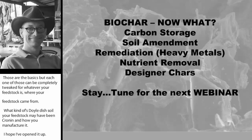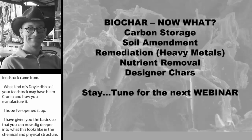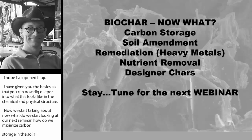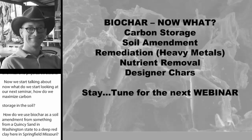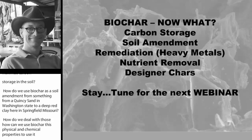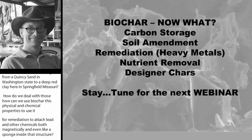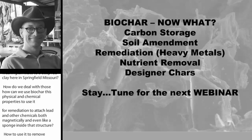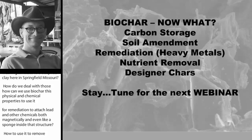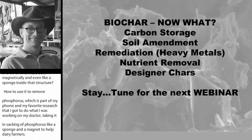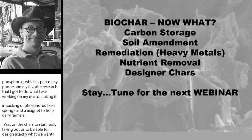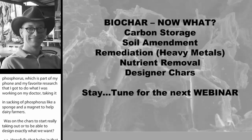Now when we start talking about now what, and we start looking at our next seminar, how do we maximize carbon storage in the soil? How do we use biochar as a soil amendment from something from a Quincy sand in Washington State to a deep red clay here in Springfield, Missouri? How can we use biochar and its physical and chemical properties to use it for remediation, to attach lead and other chemicals both magnetically and even like a sponge inside that structure? How do we use it to remove phosphorus, which is part of my fun and part of my favorite research that I got to do when I was working on my doctorate, taking and sucking up phosphorus like a sponge in a magnet to help dairy farmers? How do we design the chars to start really taking out or to be able to design exactly what we want? So hopefully that helped in that area of the physical and chemical structure. I know it was basic, but I encourage you to dig deeper and stay tuned for the next webinar that will be coming up in August.